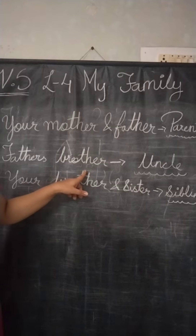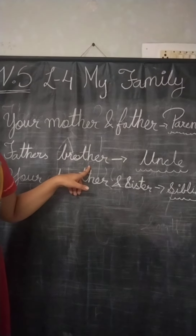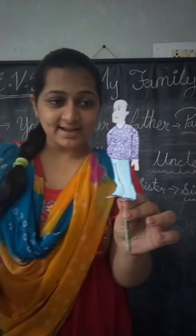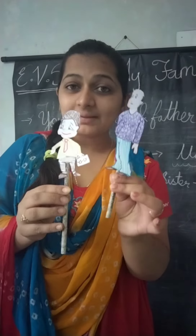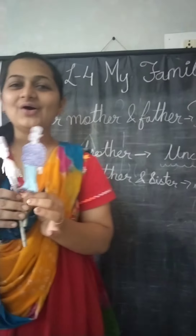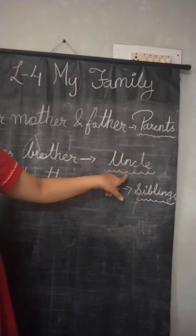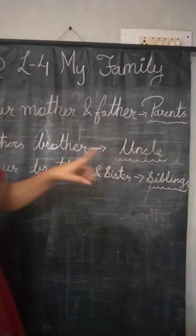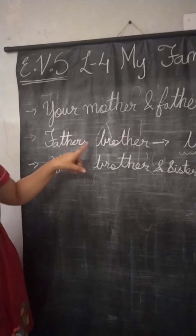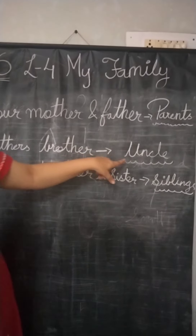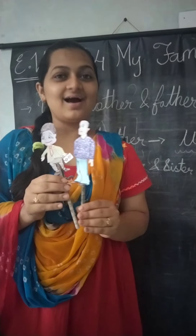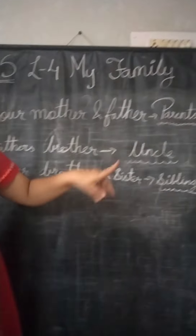Next, father's brother. So kids, now your father — yeh aapke papa hai. Your father's brother, aapke papa ke bhaiya, kya hoi? Your uncle. Jise aap chacha ya toh kakha bolte ho. So your father's brother is your uncle. Uncle kisne bolte hai? Chacha, kakha. Unhye kya bolte hai? Uncle.